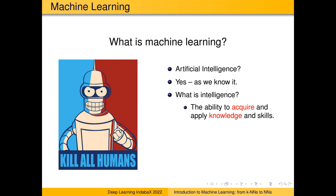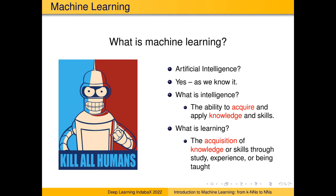The ability to learn is right there in the textbook definition. The dictionary says intelligence is the ability to acquire and apply knowledge and skills — in other words, the ability to learn. Learning itself is the acquisition of knowledge or skills through study, experience, or being taught. Learning and intelligence are very much related, so we can safely state that machine learning is our means of arriving at artificial intelligence.